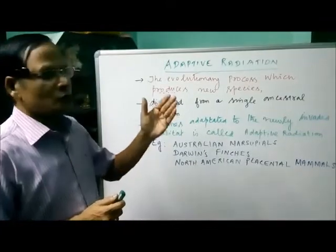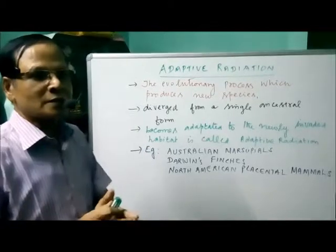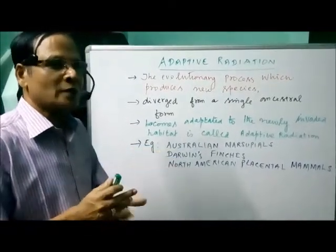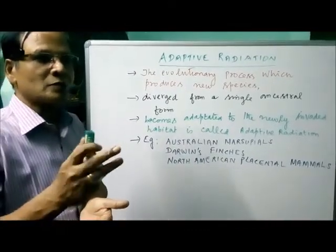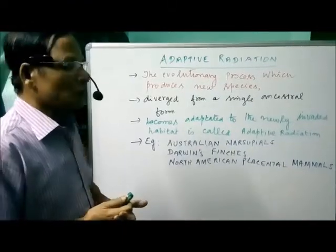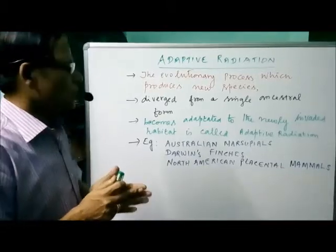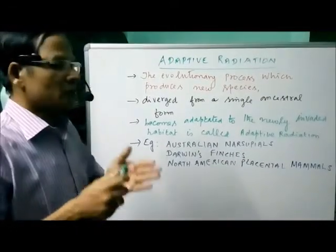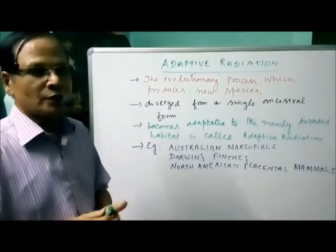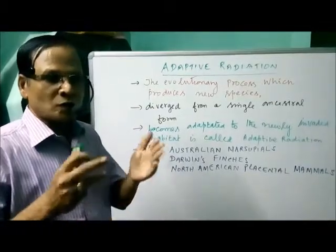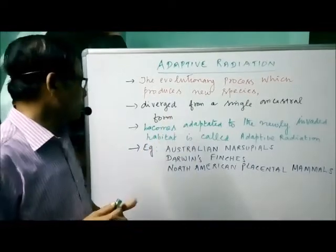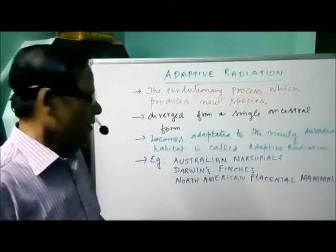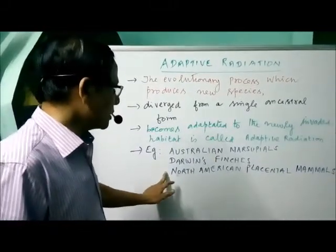Adaptive radiation produces new species diverged from a single ancestor form, adapted to a newly invaded habitat. From a single ancestor form, many forms have been diverged. This process is mostly exemplified by closely related groups which evolved in a short period of time. The three major examples of adaptive radiation are: Australian marsupials, Darwin's finches, and North American placental mammals.